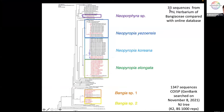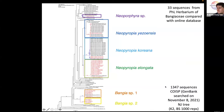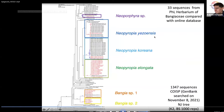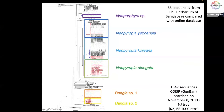Here is the phylogenetic tree we built using 35 sequences from our herbarium of Bangiaceae, compared with all sequences in GenBank. We used the CO1-5P gene only at this stage, and the analysis brought us to six species, which I will show in detail in the next slides.